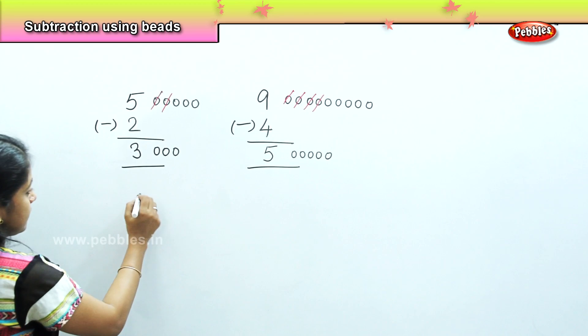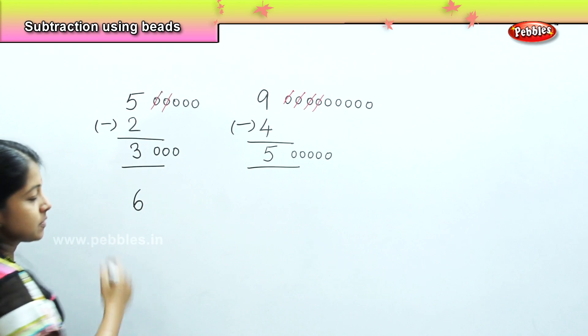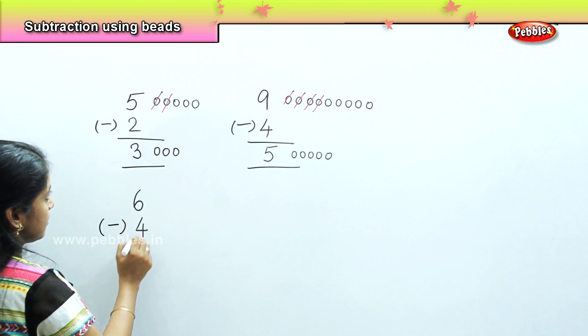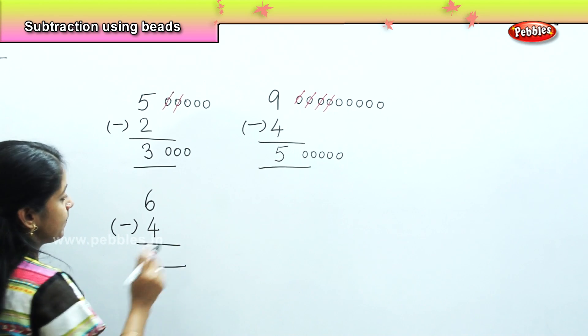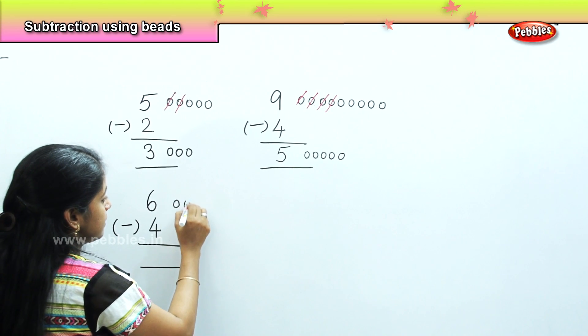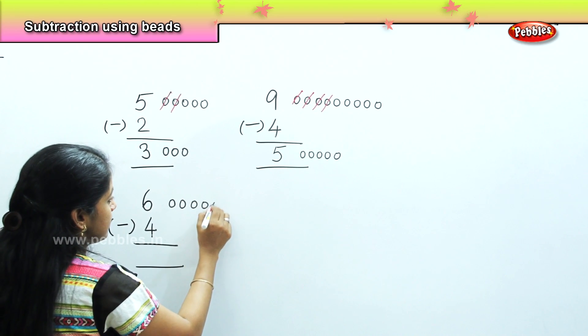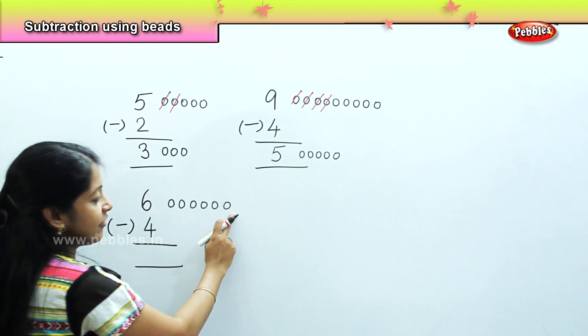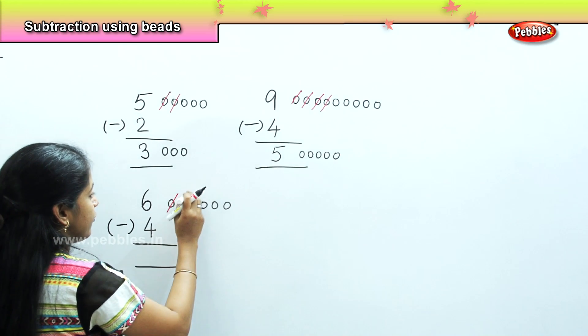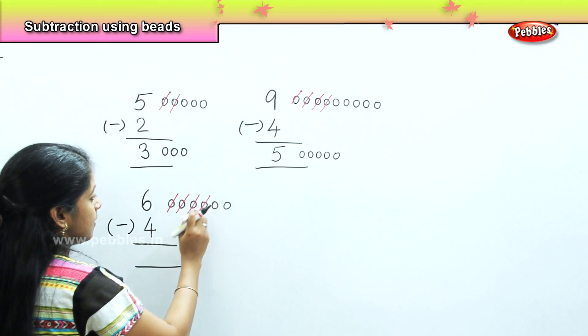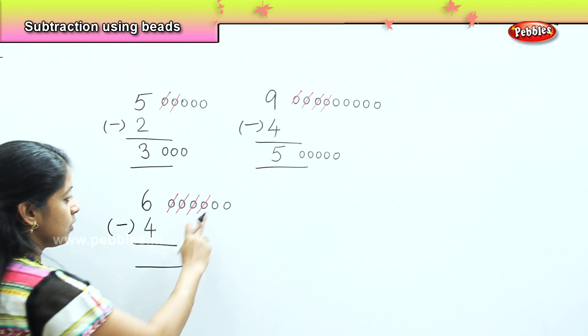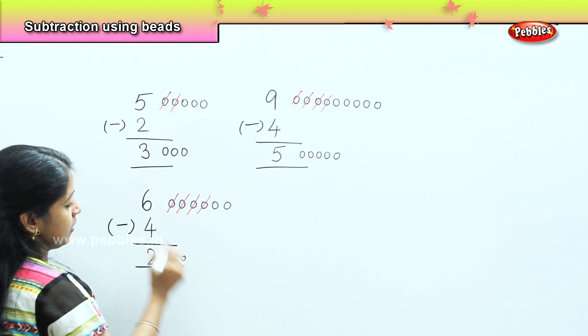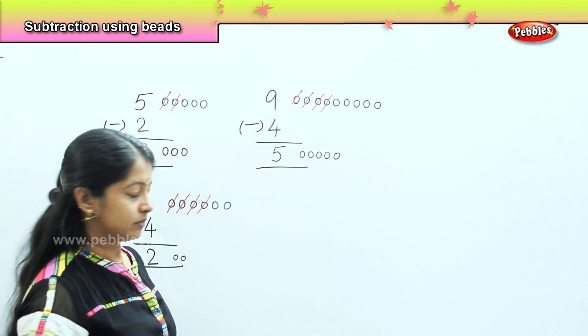Now the next one is I have 6 beads with me and I need to reduce 4 from it. So what is the answer? 1, 2, 3, 4, 5, 6 and I need to strike off 4 from it. So what is the answer remaining? 1, 2. So the balance is 2 and I will be drawing 2 beads here.